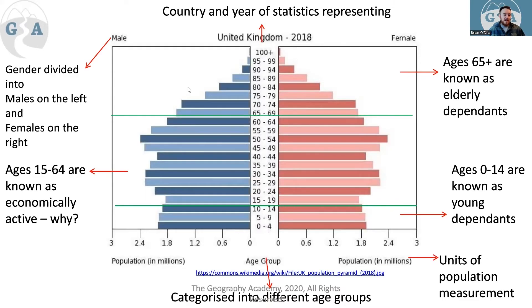Anyone from 15 to 64 is considered economically active. Anyone below that would be considered young dependents, and above 65 would be considered elderly dependents. Dependents are people we don't expect to be working or able to support themselves, and they won't be contributing to the country economically.